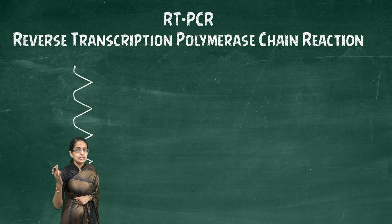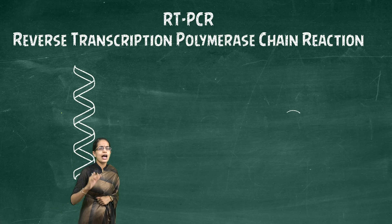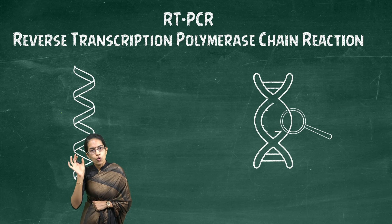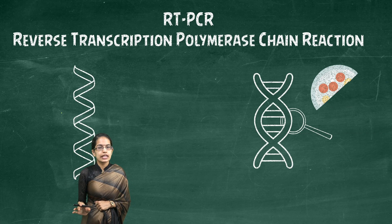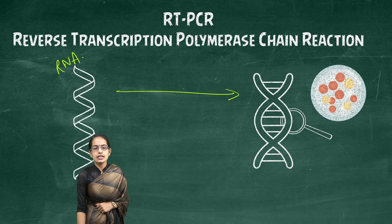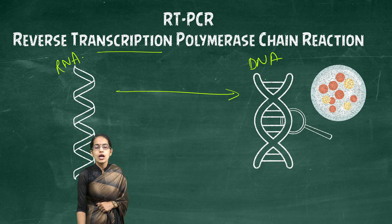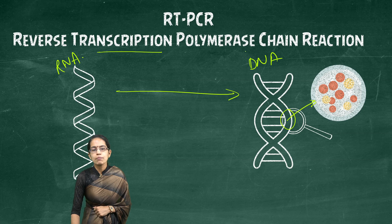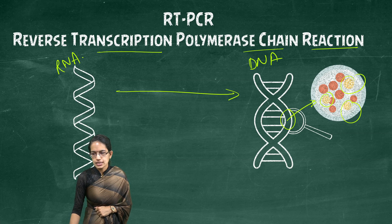Let's understand first what is RT-PCR. RT-PCR is a test which is considered the gold standard test for COVID-19 detection. The RNA of the virus is taken and this RNA is converted into DNA through the technique known as reverse transcription. Once it is converted into double-stranded DNA, this segment of DNA is amplified and millions of copies are generated through the polymerase chain reaction, and in those copies the presence of virus is identified.